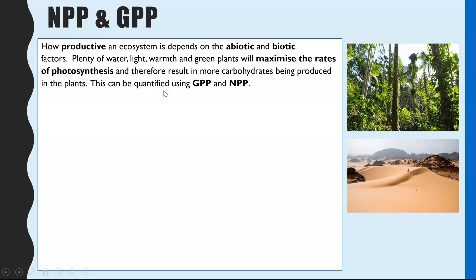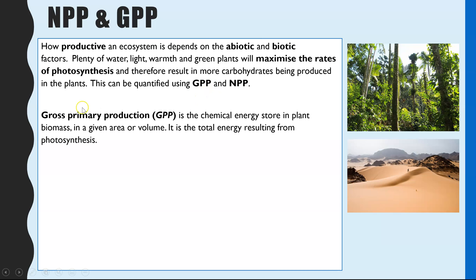We can quantify or measure productivity using GPP and NPP. GPP is gross primary productivity or production — this is the chemical energy stored in plant biomass, given per area or per volume for a fair comparison between different ecosystems. GPP represents the total energy resulting from photosynthesis, so it is the total energy entering your food chain as a result of photosynthesis.